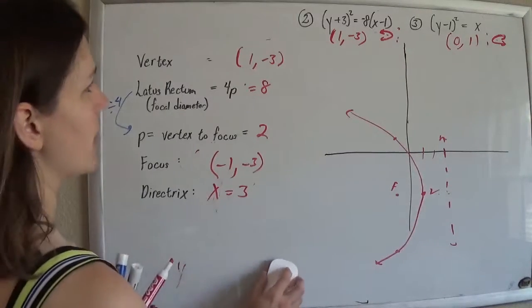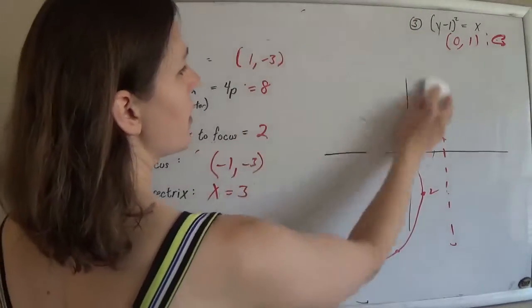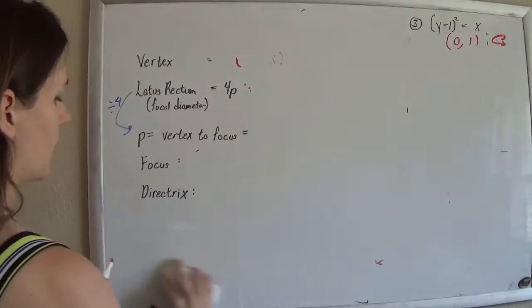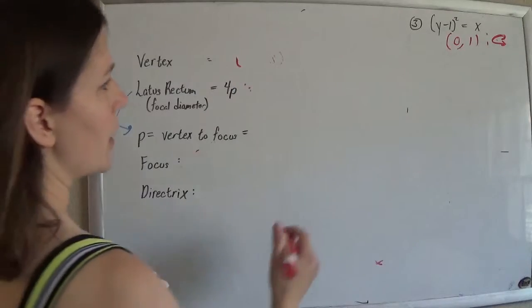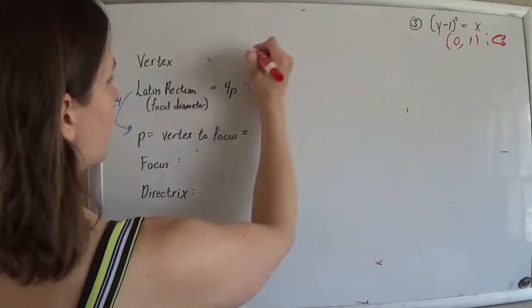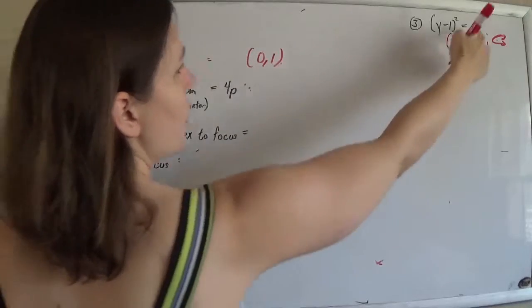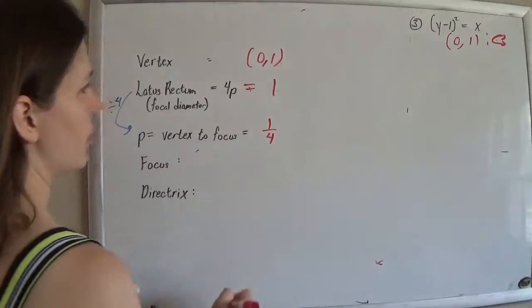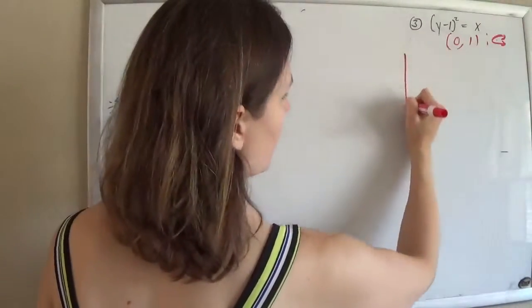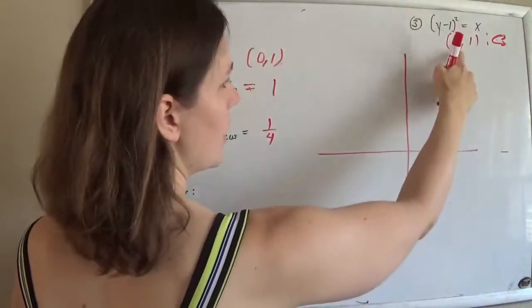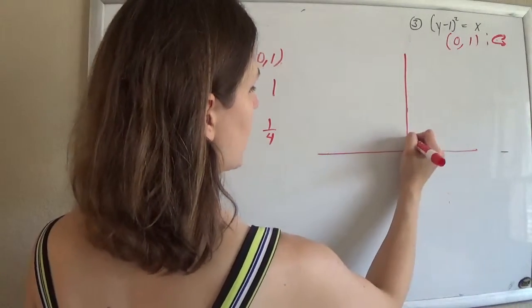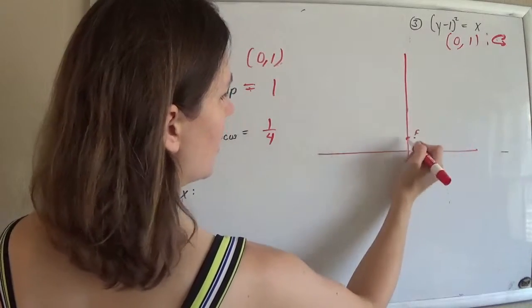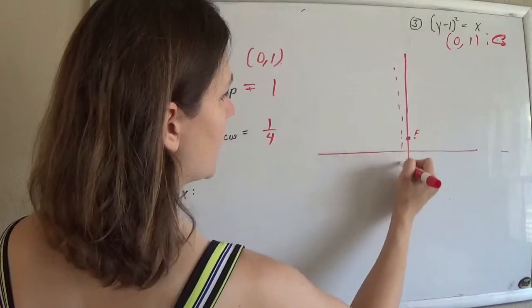And we do it one more time. So this is going to go away. And so we have the vertex is 0, 1. There's nothing here, so it's assumed to be a 1. Divide that by 4, unfortunately a fourth. So I've got my graph, 0, 1 is my vertex. It's going that way, so I'll go 1 fourth that way to get my focus.